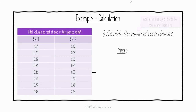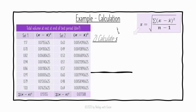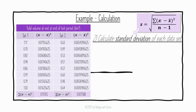We then calculate the mean for set two using the same method — adding up all the values in the set two column gives 4.45. We have eight values, so 4.45 divided by 8 gives a mean for set two of 0.55625.